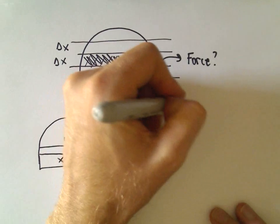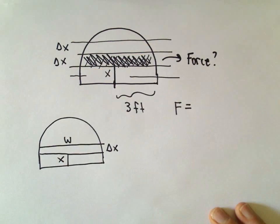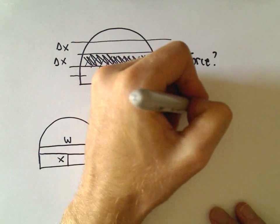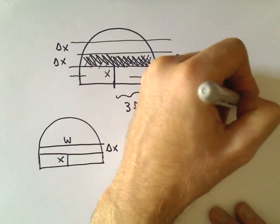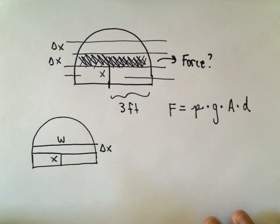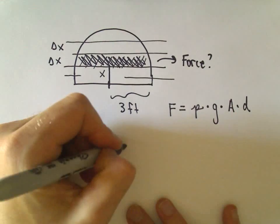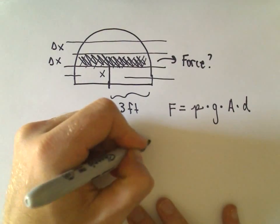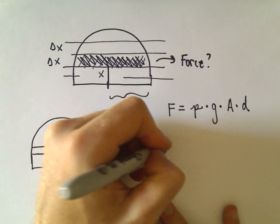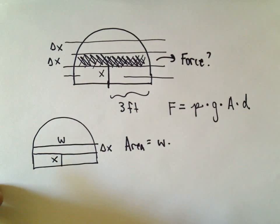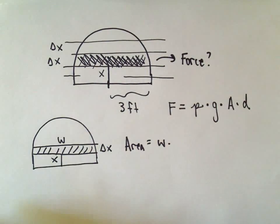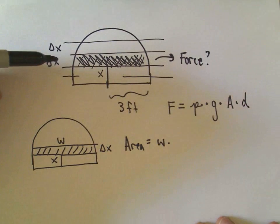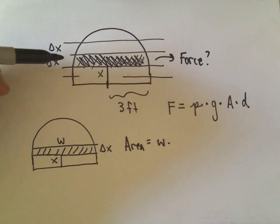Recall we said that to get the force, the force is simply going to be the density times gravity times the area times the depth. To get an expression for the area, the area is simply going to be the width times the height. It's not quite rectangular, but this little slice would be pretty close to being rectangular, so that's how I'm going to approximate it.